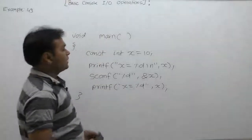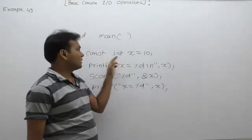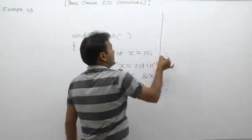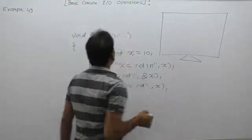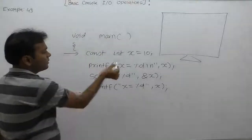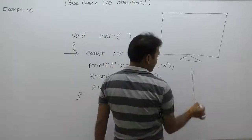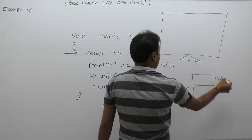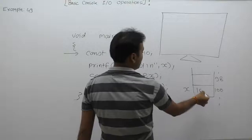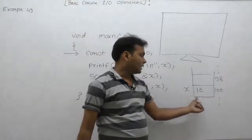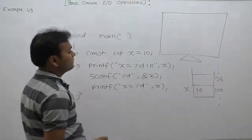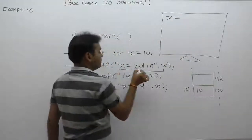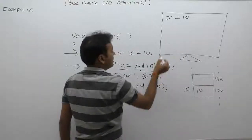In this case we are not applying the assignment operator to x, because x is a constant, so there is no compile-time error. When the program executes, the first statement creates a variable x in stack memory at some address, say 100, with the initial value 10. The printf function then prints the current value of x, which is 10, so the output is 'x = 10' and the cursor moves to the next line.